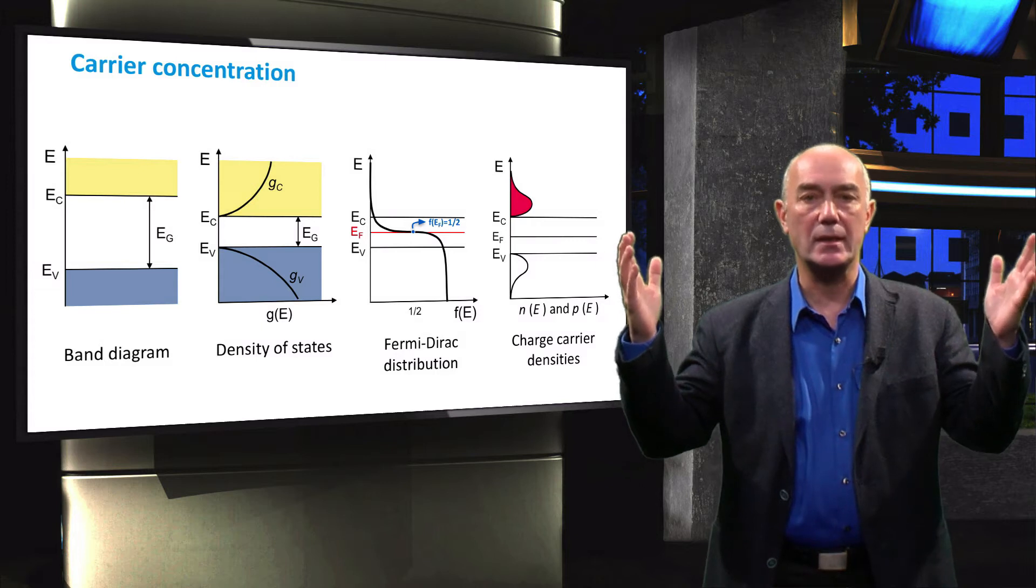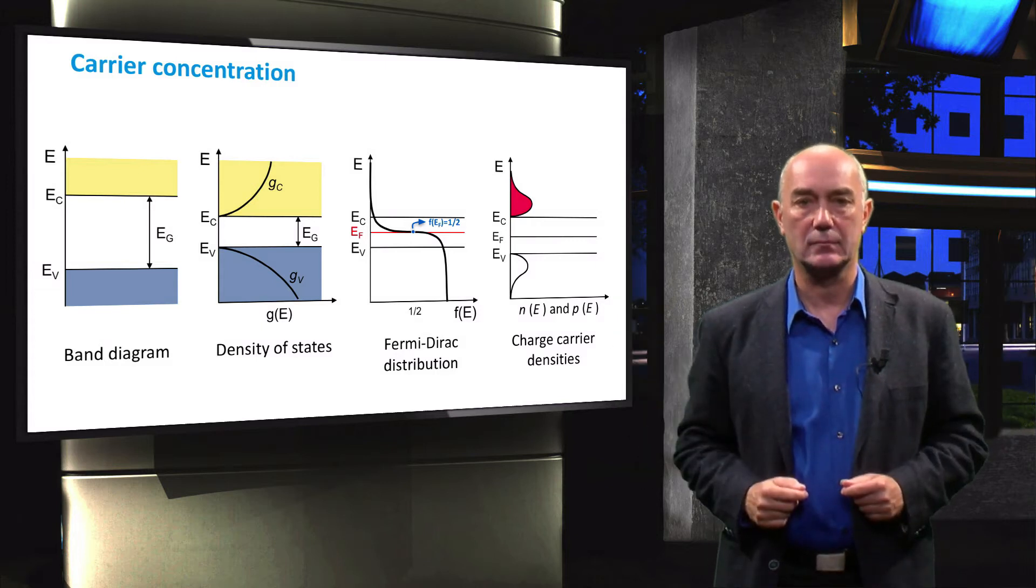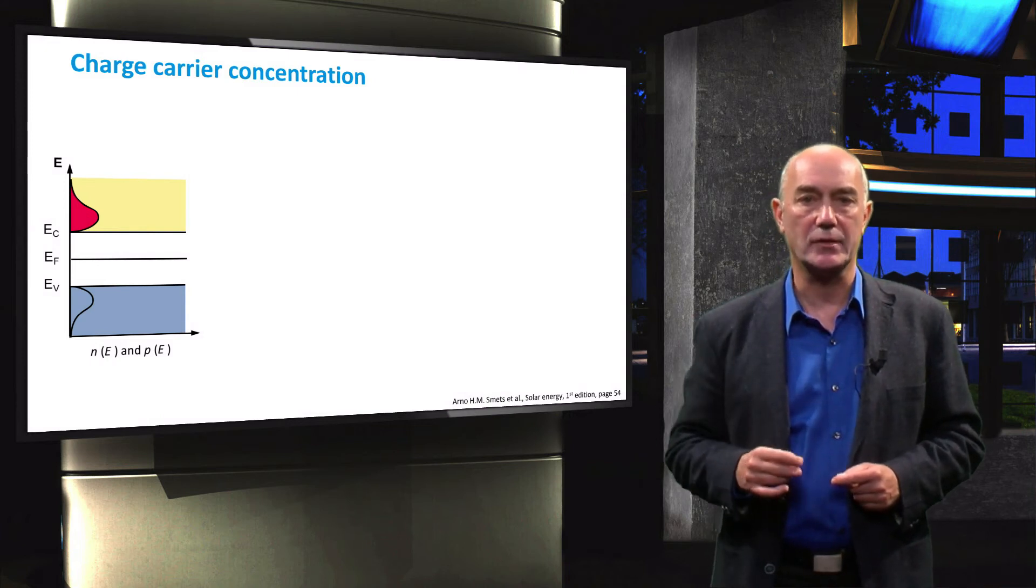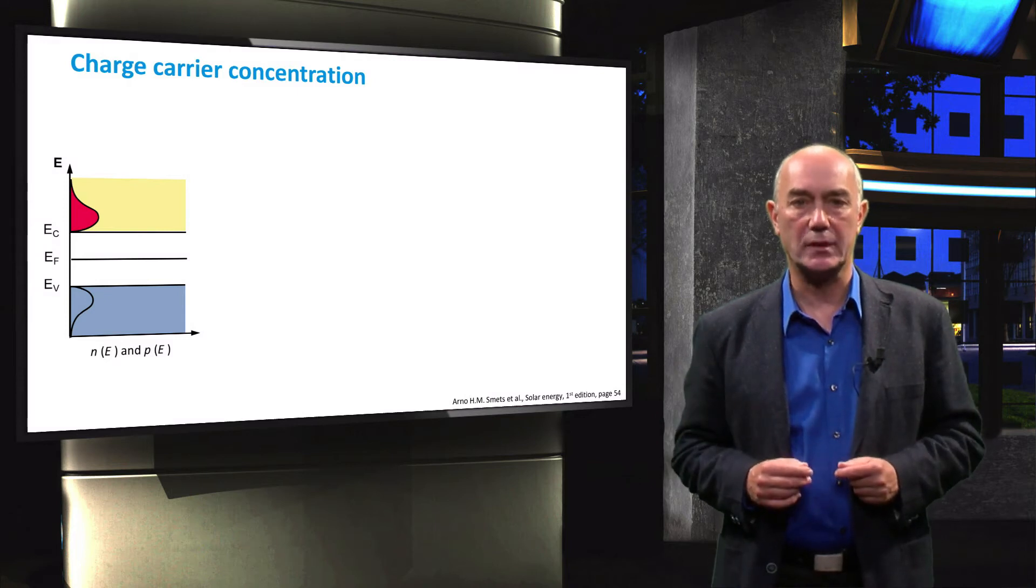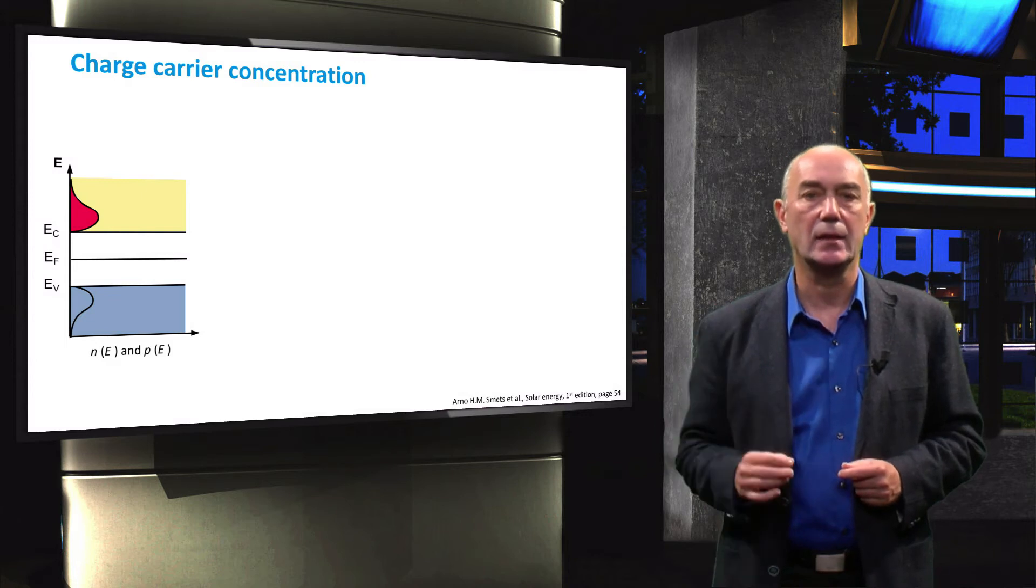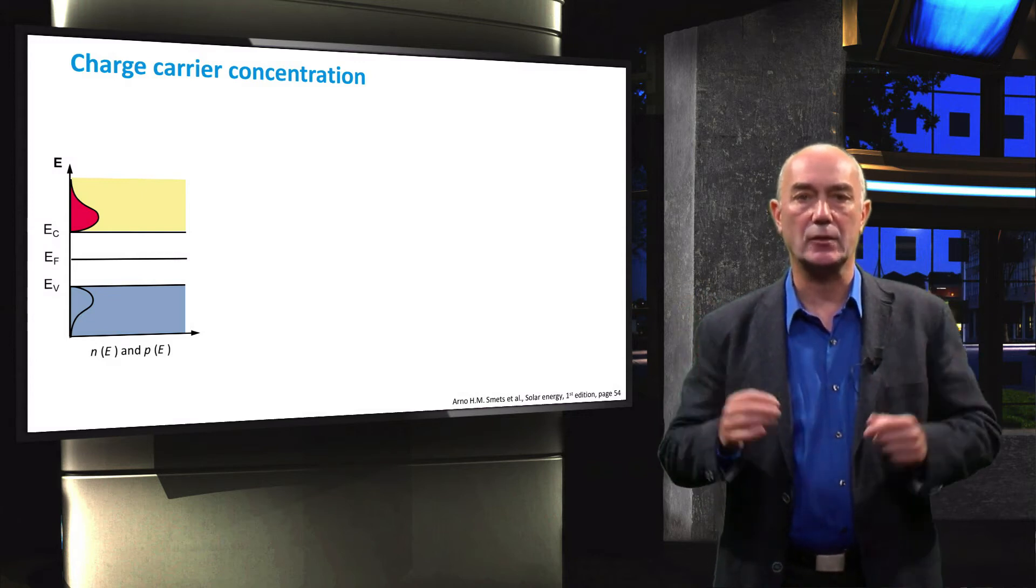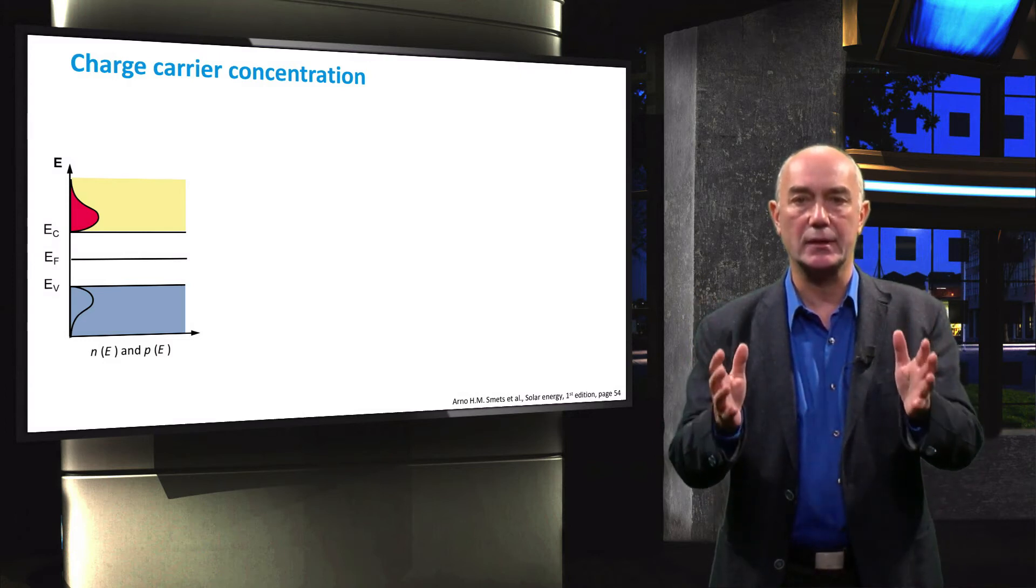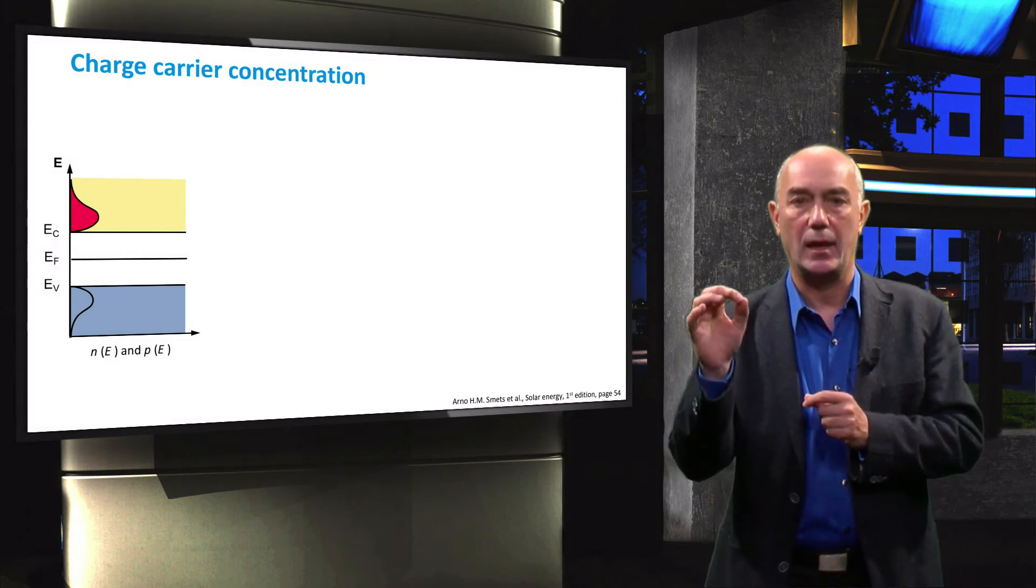So how did we get these profiles? Here we see our profiles of occupied conduction and valence energy states. The actual number of electrons occupying a certain energy level, denoted as N, is equal to the product of the number of available states, G, and the probability that a certain state is occupied, F.